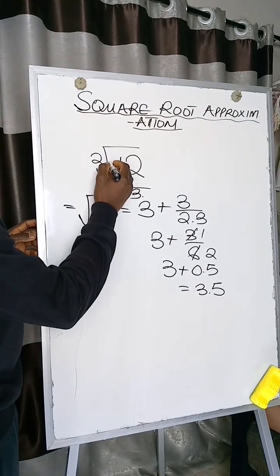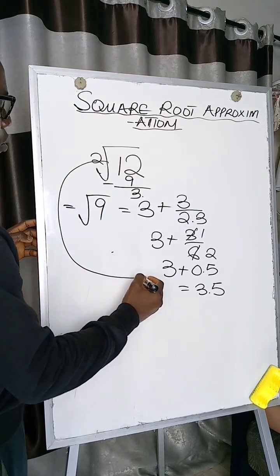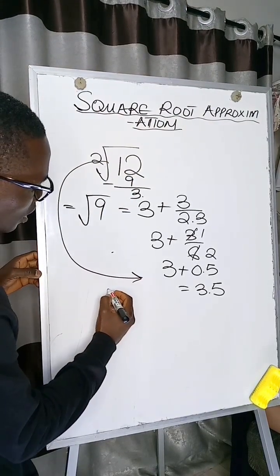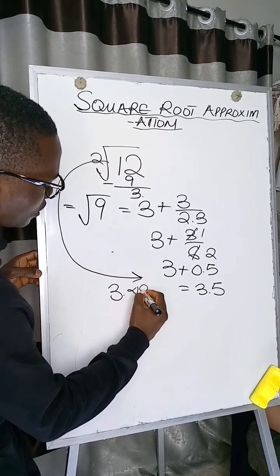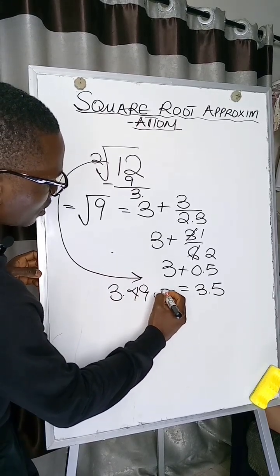Now if you calculate it out for the square root of 12, it is going to give you 3.49. And if you approximate it...